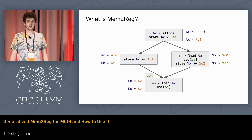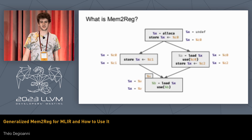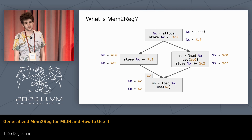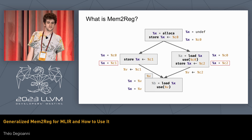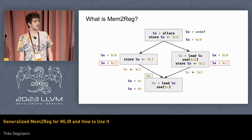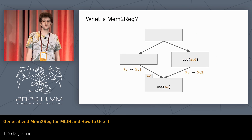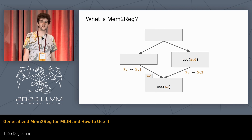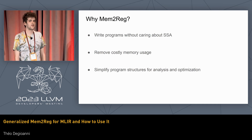So we can start replacing values. We can replace A by C0 because that's the value of X at that point. We replace B with V because it's the value of X at that point. Then we need to wire the value into V using the definition at the exit of previous blocks. If we remove all the things that are no longer necessary, this is quite a nice simplification from the initial program and we don't use memory anymore.